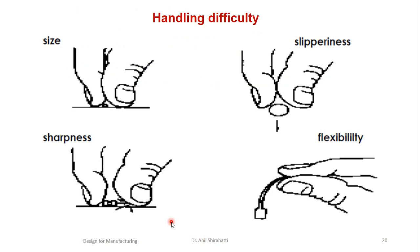Handling difficulties must also be considered. We have to look at size — if the size is very small, it creates problems with hand handling. If it is very sharp, it is dangerous. It should not be too flexible either, so that it doesn't break during transport. And it should not be too slippery. During the design phase, all four parameters must be considered: size, sharpness, flexibility, and slip index.